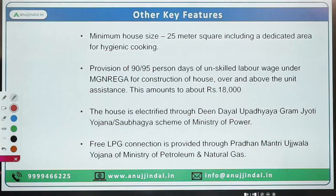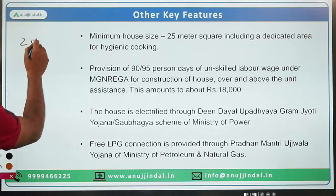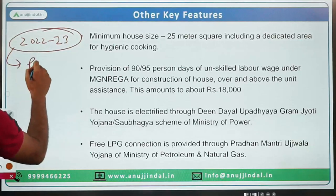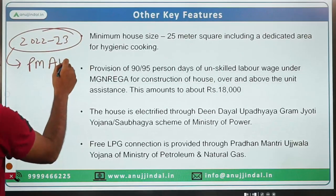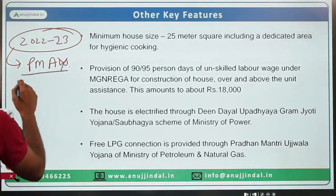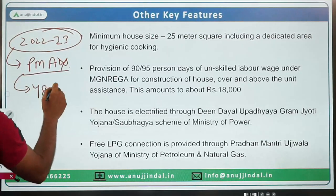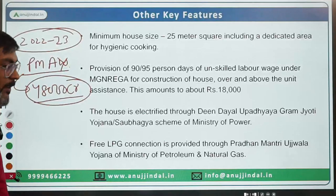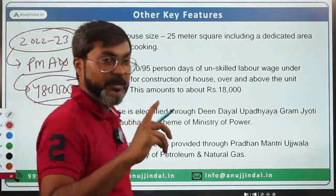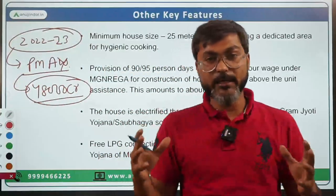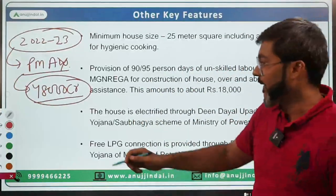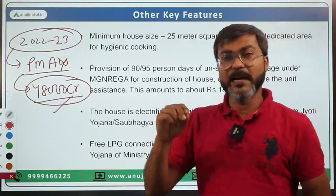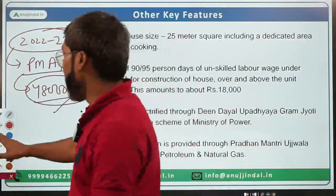In the Union Budget 2022-23, a total of ₹48,000 crore has been allocated for Pradhan Mantri Awas Yojana — combining both the urban and grameen components.